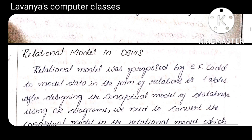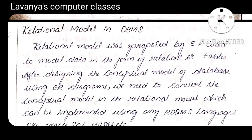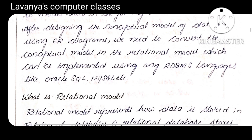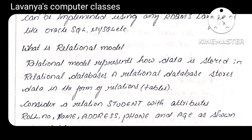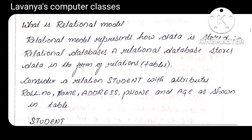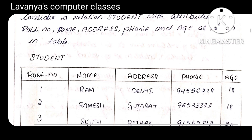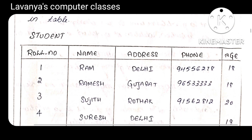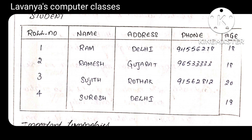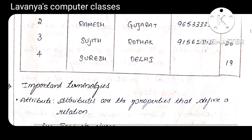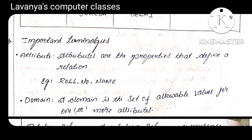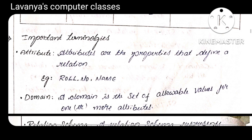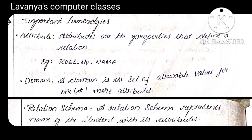Next one is the relational model in DBMS. A relation is also called a table — data is represented in the form of rows and columns in table format. This is a simple example of a relational data model: a student relation with some fields — one, two, three, four, five — and some rows, four rows. Next are the important terminologies.